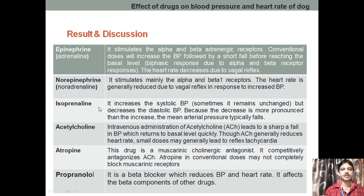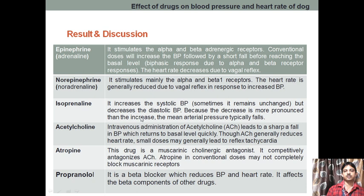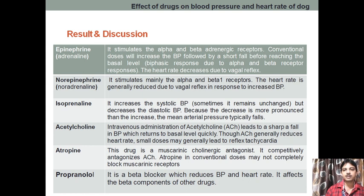Next is isoprenaline — again an adrenergic drug. It increases the systolic BP, though sometimes it may remain unchanged. The systolic BP increases but there is a decrease in diastolic BP — the decrease is more pronounced than the increase. So the effect of isoprenaline, acting on the beta receptor, results in a greater decrease compared to the increase. You can say that the mean blood pressure will be decreasing — the mean arterial pressure typically falls. These three drugs are all related to adrenergic drugs.